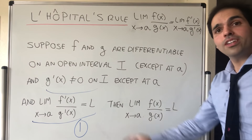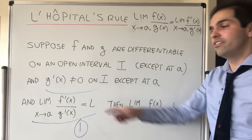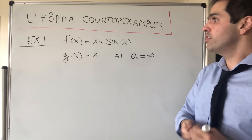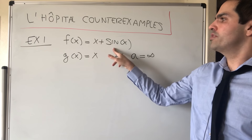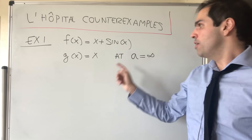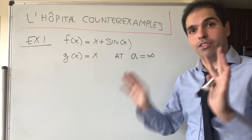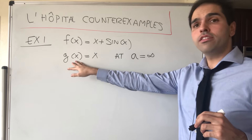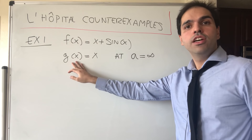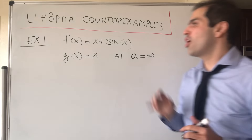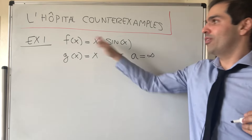So why is it important that the limit of the derivatives goes to some limit? Consider the function f(x) = x + sin(x), and g(x) = x, evaluated at A equals infinity, which is completely fine for L'Hopital's rule. Notice the derivative of g is never zero, except possibly at zero, but that's far away from infinity.